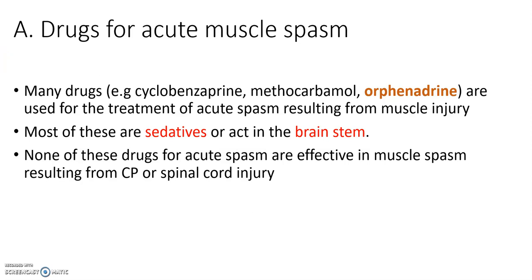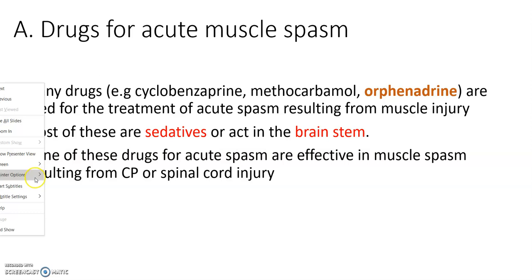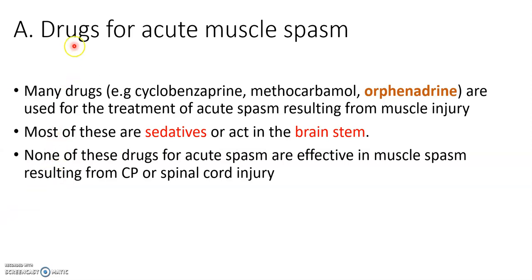Drugs for acute muscle spasm. There are many drugs used for the treatment of acute spasm resulting from muscle injury, and most of these drugs are sedatives that cause sedation, or they act in the brainstem.